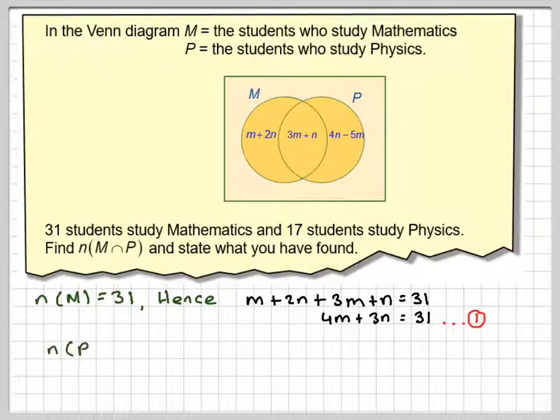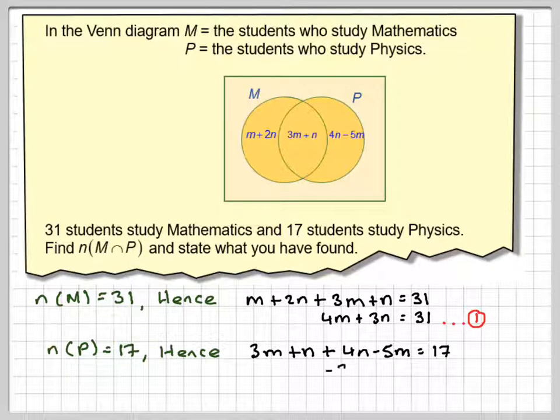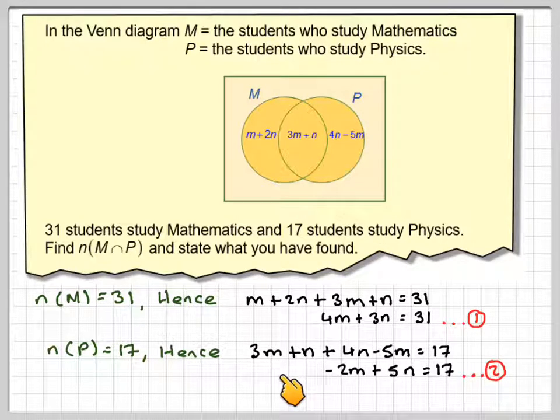And then in P, the number in P is 17. So therefore, 3M plus N plus 4N minus 5M is 17. So that gives me minus 2M plus 5N equals 17.